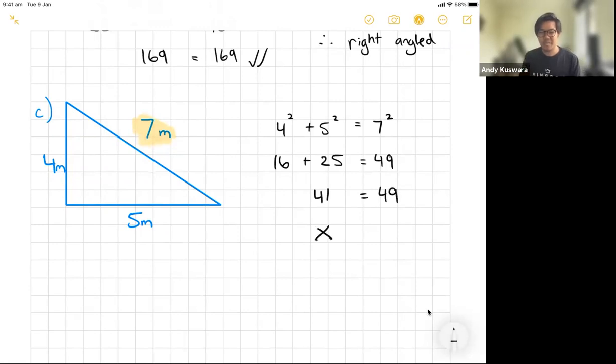See how 41 is not the same thing as 49? This one doesn't add up. There's something that's gone wrong. So here we can say that therefore this triangle is not right angled.